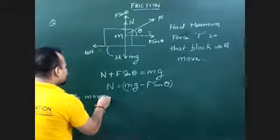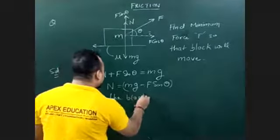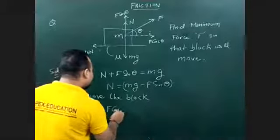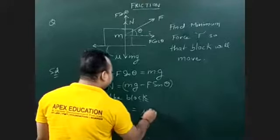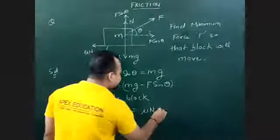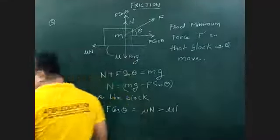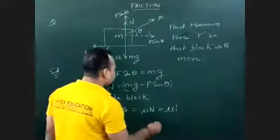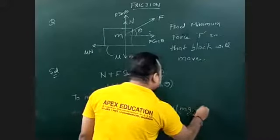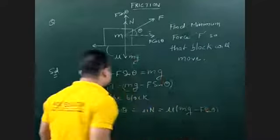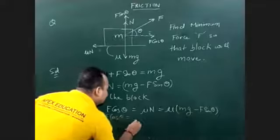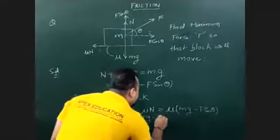To move the block, the horizontal force component F cosθ must equal the maximum friction force mu times N. So F cosθ equals mu times N. Now substituting the value of N: F cosθ equals mu times (mg minus F sinθ).